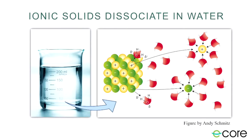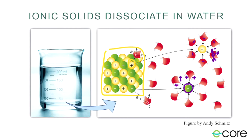When ionic compounds dissolve in water, we actually get a new intermolecular force. Each of these individual ions splits apart — we call that dissociating. For example, the positively charged cation is surrounded by water molecules where the red oxygen atoms point toward it, because oxygen is the negative side of water. Similarly, the negative anion has all the hydrogens pointing toward it, because hydrogens are positive. This attraction between water and those ions is called an ion-dipole force.